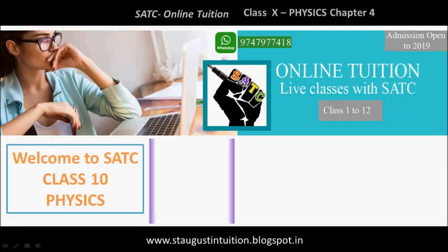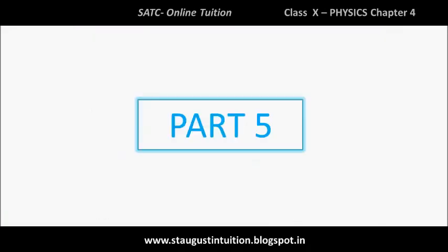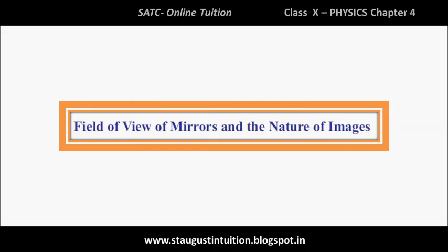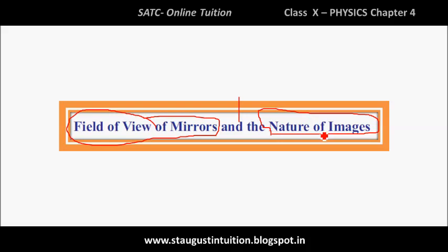Hello friends! Welcome to class 1046, Chapter 4, Reflection of Light, Part 5. In this class, we will learn the field of view of mirrors, the nature of images, and convex and concave mirrors. Today we are going to discuss two types of spherical mirrors — convex and concave. Before watching this video, please watch Part 4 about field of view of mirrors.